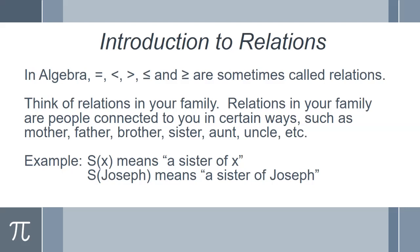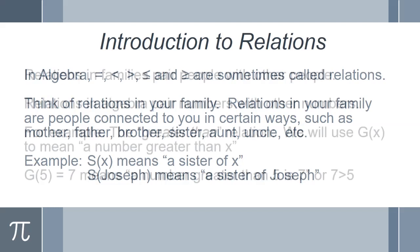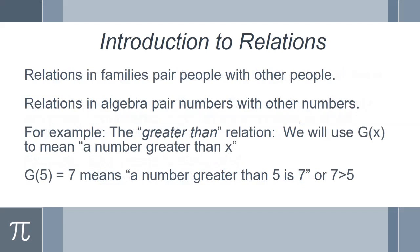We're going to cover more of this tomorrow. Relations in families pair people with other people — your aunt, uncle, father, mother, sister, brother. Relationships in algebra pair numbers with other numbers. For example, the greater than relation: we use g of x to mean a number greater than x. G represents greater than — I picked g because it makes sense for greater. So g of five means a number greater than five, which equals seven — or seven is greater than five. This is just a quick introduction to the term relations.